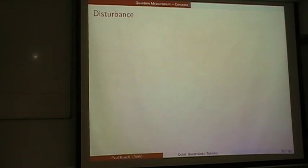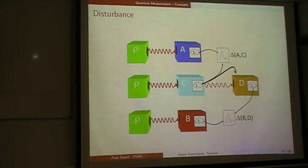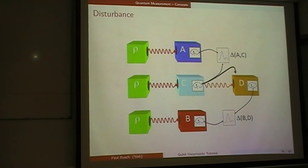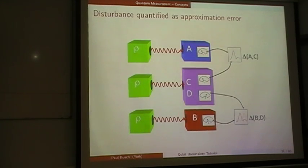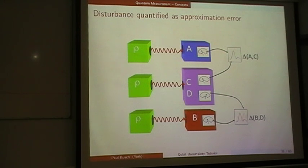I also showed you with those two pictures how to reduce measurements of disturbance to measures of approximation error and joint measurements. So that relieves us of the task of considering joint measurement uncertainty relations and error-disturbance relations separately. If we do one, we have the other as well.